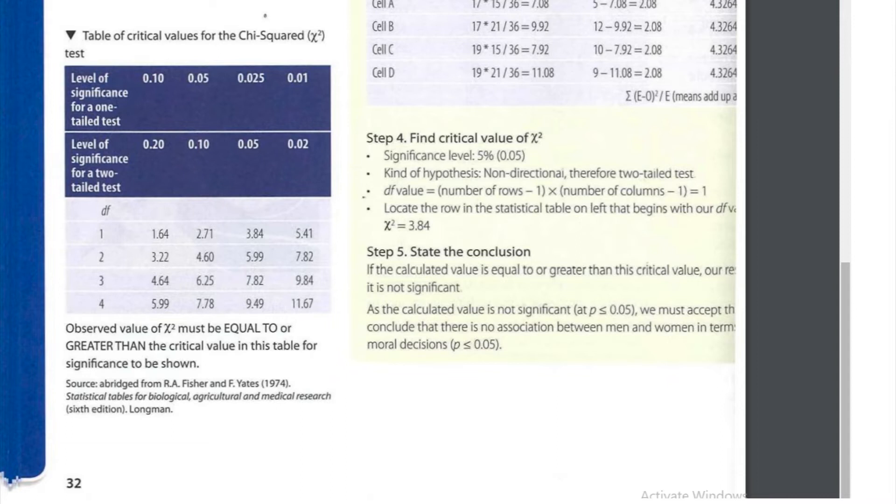OK, the first thing we need to know, what are our degrees of freedom? We calculated it as 1 and that shows us that we're just using the first row in this table. Not interested in the figures underneath, just the first row there.